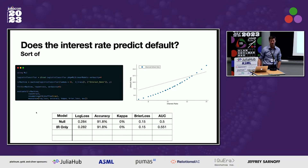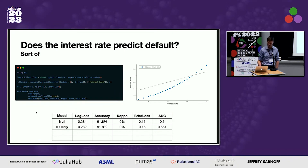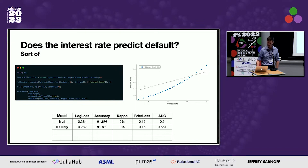We test the hypothesis that higher interest rates mean more defaults by fitting a single-variable logistic model using only the interest rate. The log loss goes slightly lower but accuracy and kappa don't change much. What is interesting is that as the interest rate increases, the default rate does increase — so higher interest rate leading to higher default does appear to be true in practice.